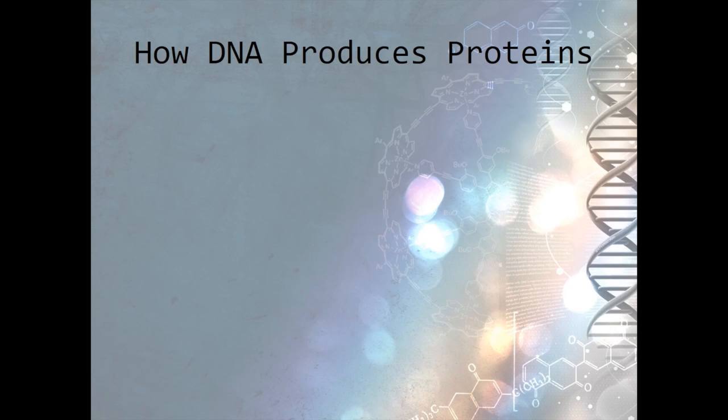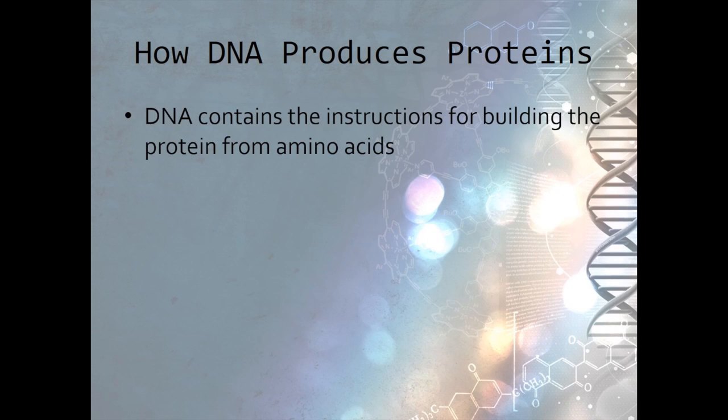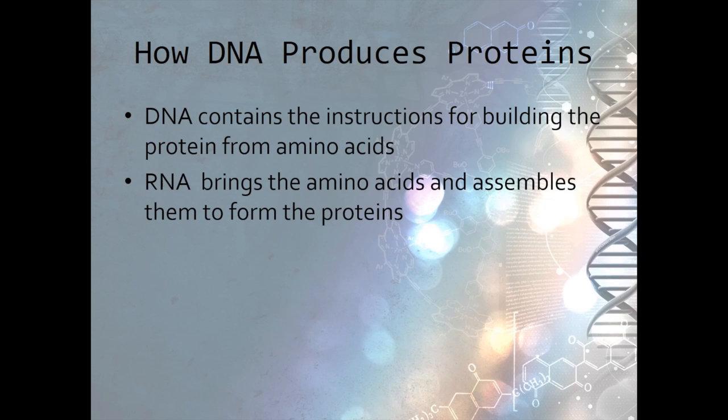We now know how genetic information is stored in DNA and that this information is used to make proteins that determine the function and structure of cells. But what exactly happens for DNA to produce proteins? We can think of the protein building process like an assembly line. The DNA holds the instructions for building the protein from amino acids, like a blueprint contains the instructions for building a car from all the different parts. RNA uses the instructions contained in the DNA to bring the amino acids and assemble them in the correct order to form the protein.